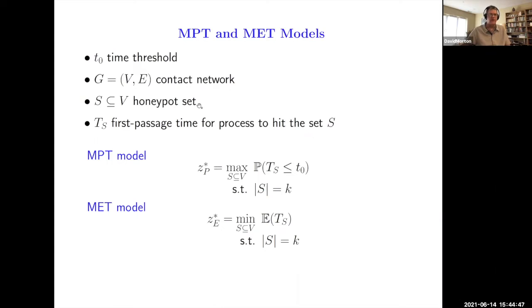As the system manager, we can monitor a subset of handsets within our bandwidth. T sub S is going to be the first passage time for this stochastic process of replicating viruses to hit the set S. In this first model, I want to maximize the probability that we detect the virus before some T0. T0 could be a time that is governed by when does the thing really go viral in terms of spreading pervasively on the network. Or we could minimize the expected time. We're just cardinality constrained here.